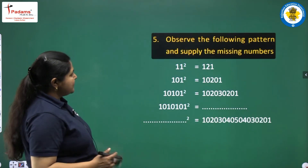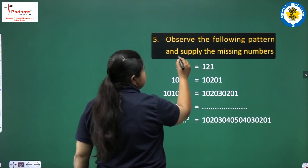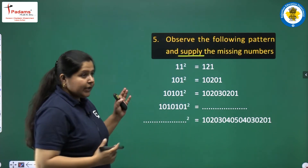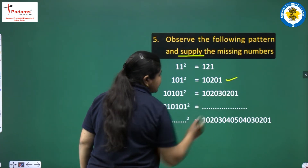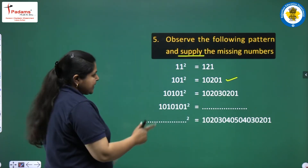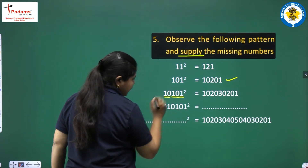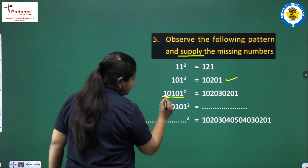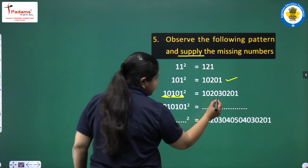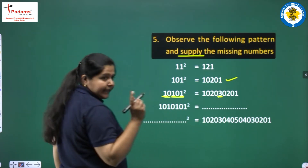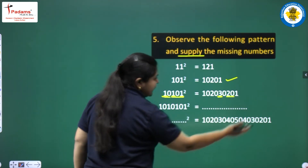The next question: observe the following pattern and supply the missing numbers. There is a new pattern. 101 squared is 10,201. For 10,101 squared, we see three 1s and the result goes 1, 2, 3 in the center, then decreasing 2, then 1. At the leftmost and rightmost points we have 1, and in the center the count increases and then decreases.